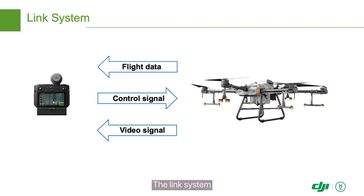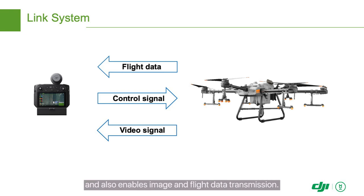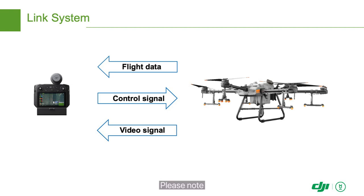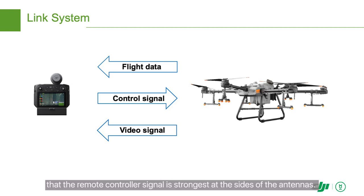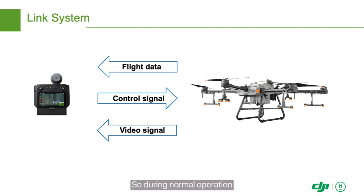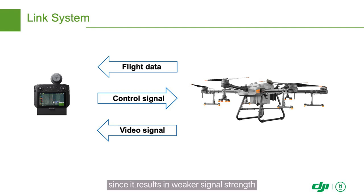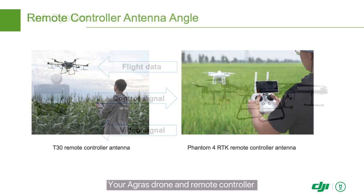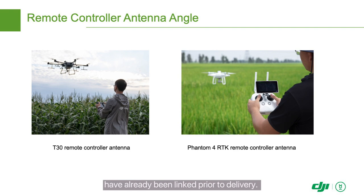The link system, or remote control system, helps the pilot control the drone and also enables image and flight data transmission. Please note that the remote controller signal is strongest at the sides of the antennas, so during normal operation, avoid pointing the antennas towards the drone since it results in a weaker signal strength. Your Agris drone and remote controller have already been linked prior to delivery. You won't need to link them unless you change the remote controller.